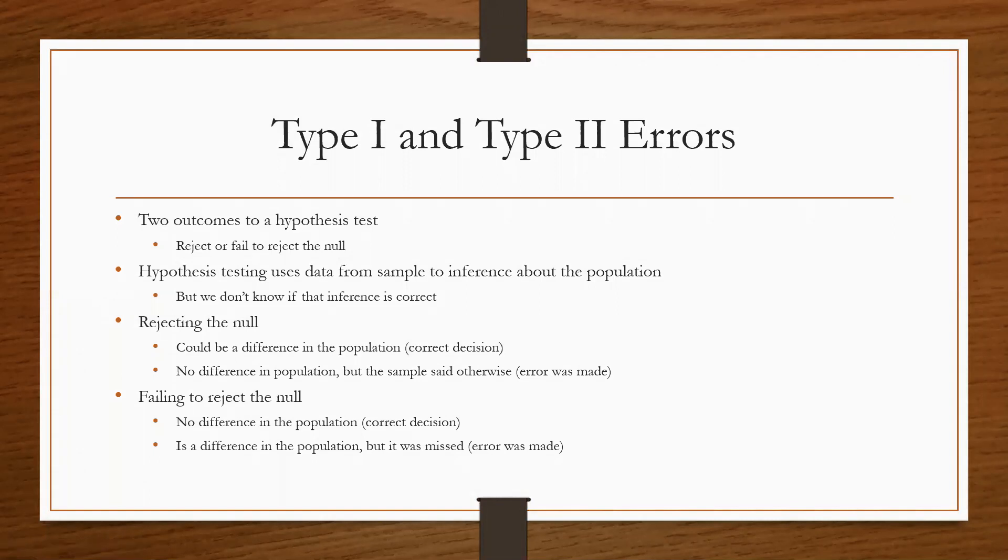Starting off, we're going to talk a lot about Type I and Type II errors. Basically, with every single hypothesis test there are only two possible outcomes: you either reject or you fail to reject the null. We use hypothesis tests, you know, we get data from a sample and we use it to make inferences about the population, but the biggest thing is that we don't know if that inference is correct because there's always a possibility that it will be wrong.